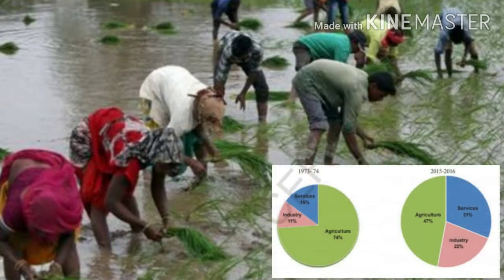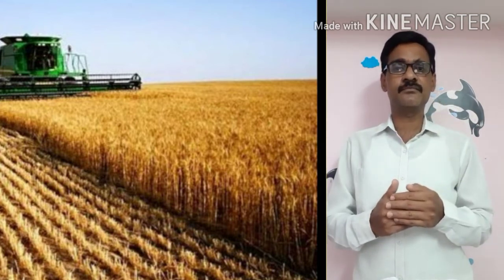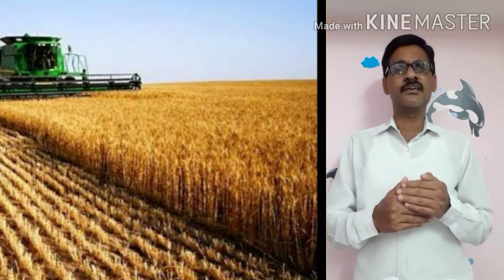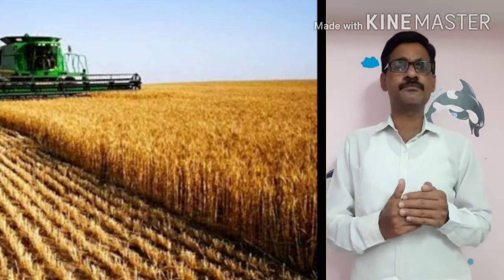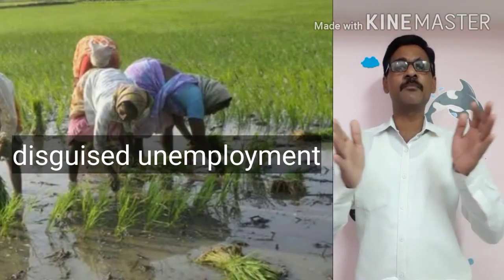It means working people in the agriculture sector are not producing as much as those in the secondary and tertiary sectors. We observe that more people are working in agriculture than required. More people are working in that sector, but they are not fully employed. If some people leave the production, the production will not be affected — there is no change in production if they come outside. This type of unemployment is called disguised unemployment.